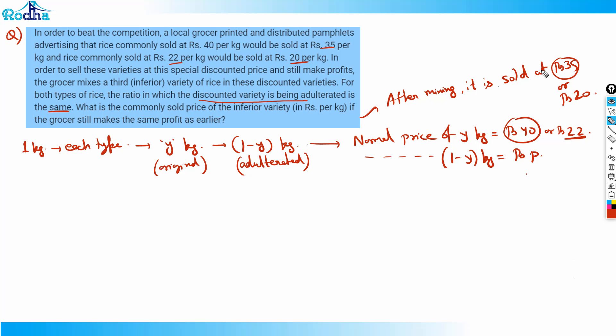I'll take the weighted average here. The average price is 35 rupees for y kg of rice at Rs. 40 per kg. So y kg at Rs. 40 per kg is 40y plus 1 minus y kg at Rs. p, which is p times (1-y). The total weight here is 1 kg, so I can write y plus 1 minus y, but it won't make any impact; it is actually 1 only.